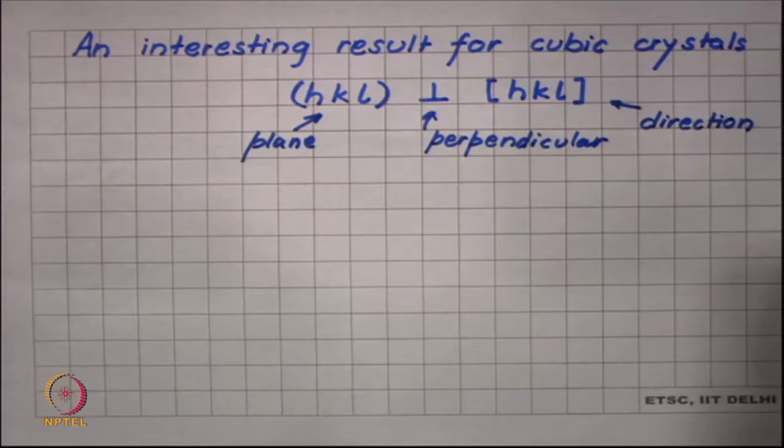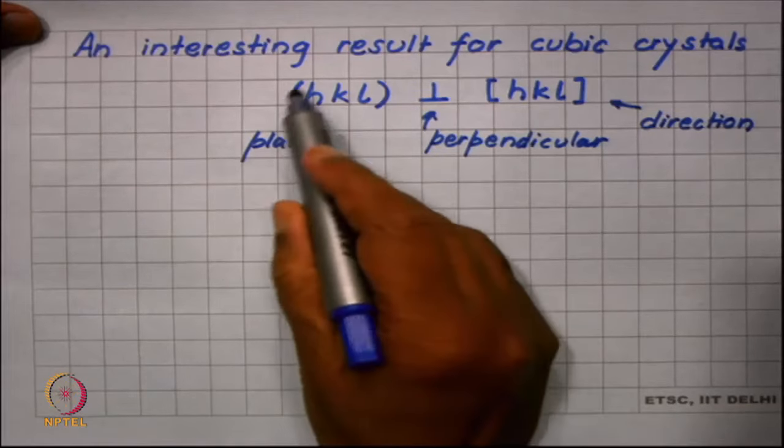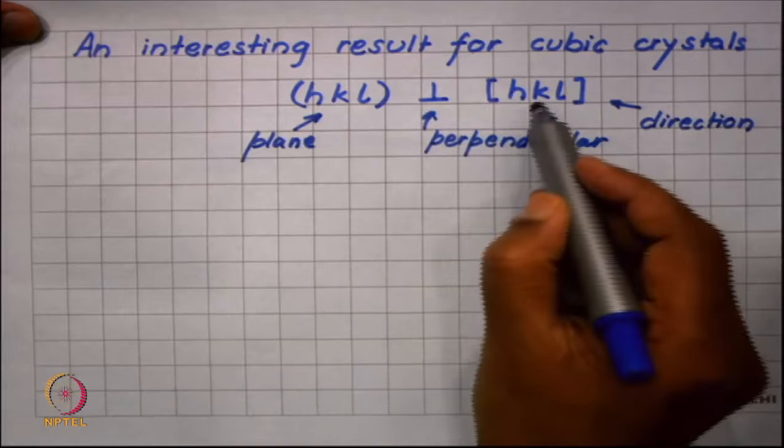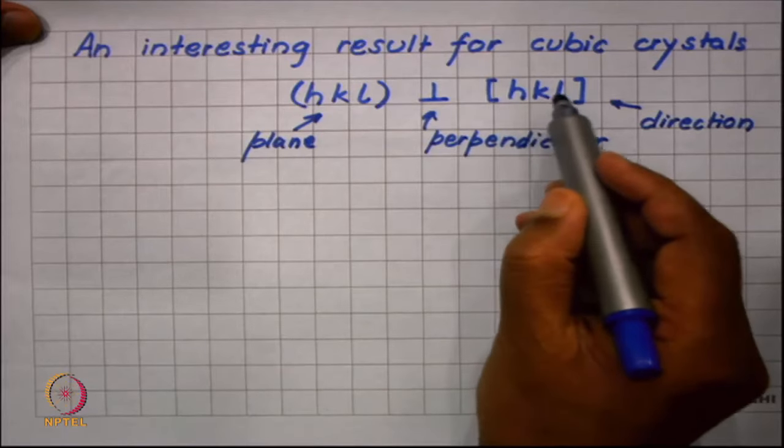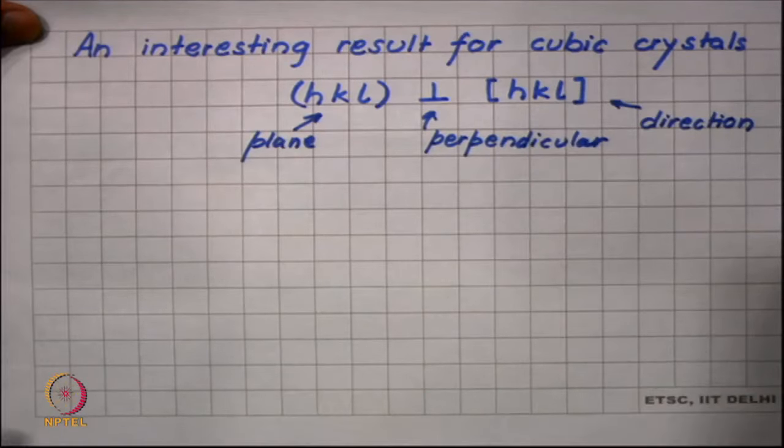This is a very interesting and important result. What it is actually saying is that the normal to a given plane will have indices which are exactly the same as the indices of the plane.